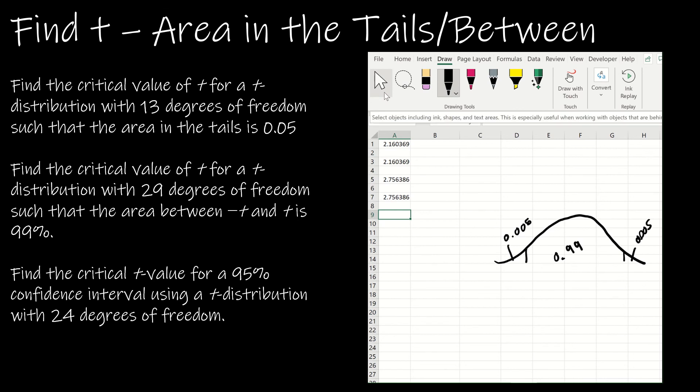Last one: the critical t-value for a 95% confidence interval using a t-distribution with 24 degrees of freedom. Just as we did before, if there's 95 in the middle, then we've got 5% total on the outside. So this is 2.5% and this is 2.5%.